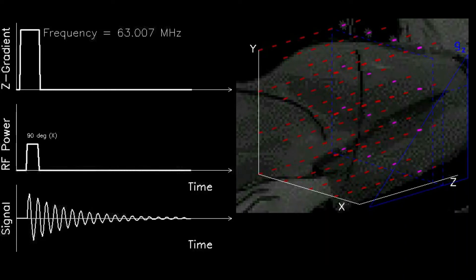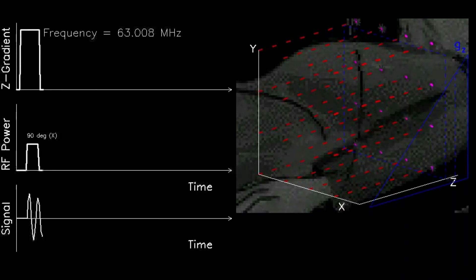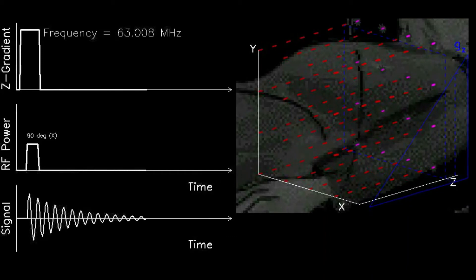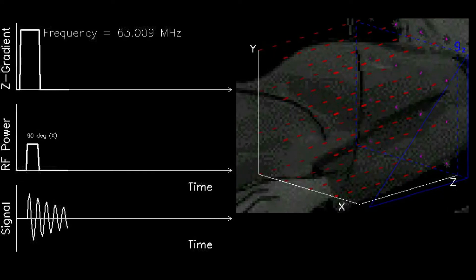This gradient changes the resonance condition such that when the 90 degree RF pulse is applied to flip the spins, it only resonates or interacts with a smaller slab of volume oriented perpendicular to the main magnetic axis.